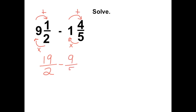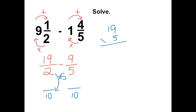Now we need to find a least common denominator between 2 and 5. The least common denominator would be 10. To get from 2 to 10 we multiply by 5, so we also multiply the numerator by 5, giving us 95 over 10. To get from 5 to 10 we multiply by 2, so we also multiply the numerator by 2 and we get 18 over 10. Now we can subtract.